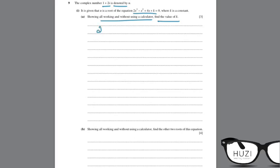Substituting u into the equation: 2 times (1 plus 2i) cubed minus (1 plus 2i) squared plus 4 times (1 plus 2i) plus k equals 0.